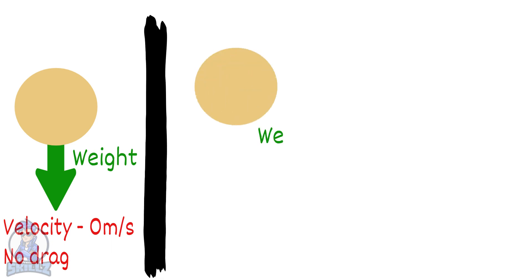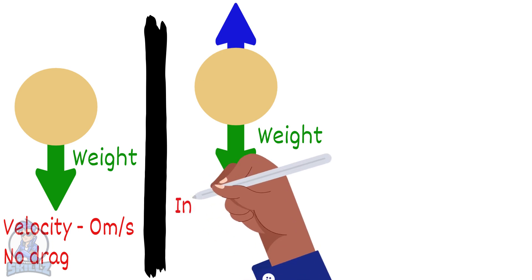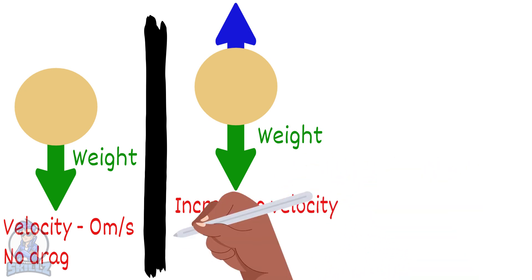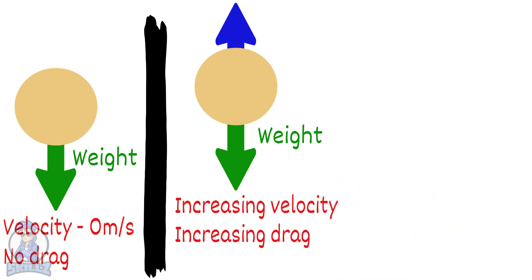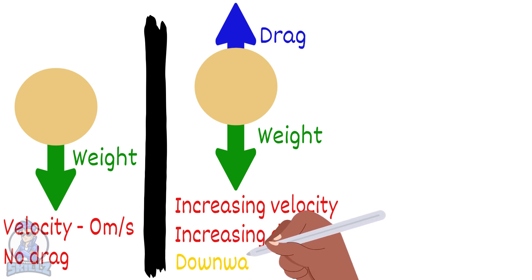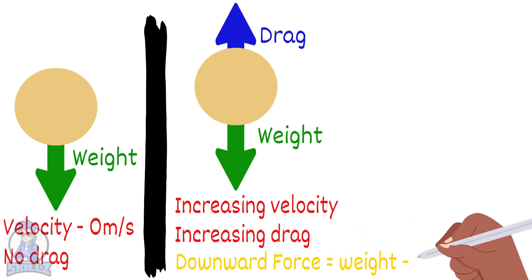The new image shows that the ball is now moving and has a velocity and a drag force. With increasing velocity, the drag force would also increase. The drag force opposes the movement and so acts upwards. Now to get the total downward force, you need to subtract the drag force from the weight force.